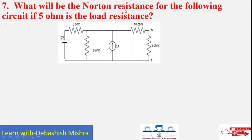What will be the Norton resistance for the following circuit if 5 ohm is the load resistance? We have to calculate the Norton resistance. To do so, we short the 10 volt source across the 1 ohm resistor.